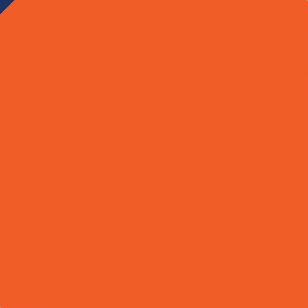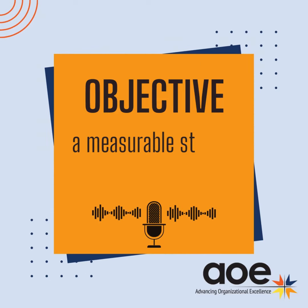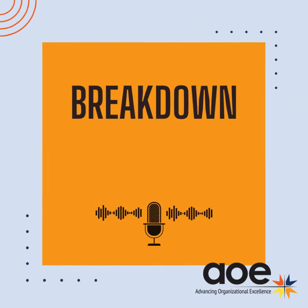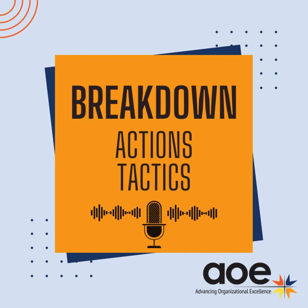From goals, you have an objective, which is a more measurable step to achieve that goal. For example, your goal might be increasing market share, and your objective would be launching a new product line. From there, you break it down into actions — tactics that are ways to accomplish that objective, such as running a targeted marketing campaign, using social media, or developing a website.